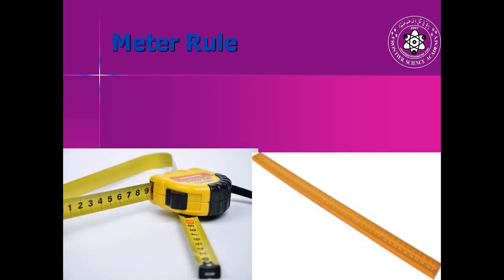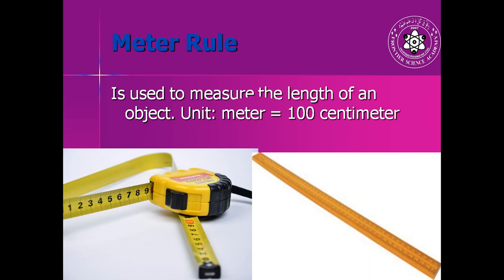Next is meter ruler. This is used to measure the length of an object. The unit of length is meter, and its smaller unit is centimeter. One meter is equal to 100 centimeters. In this diagram you can see a meter rule, and this is called meter rod. This meter rod is almost one meter, that is equal to 100 centimeters.